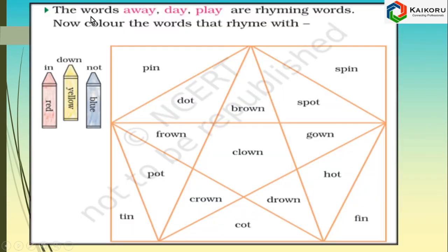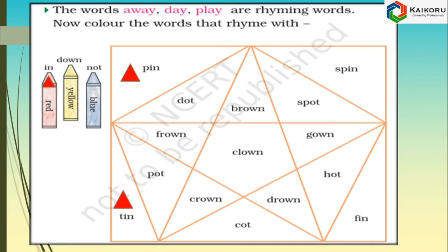The words away, day, and play are rhyming words. Now color the words that rhyme with 'in.' Color with red the words that have a rhyming sound with 'in.' The words are: pin, fin, spin.